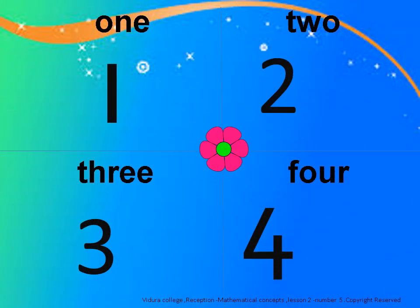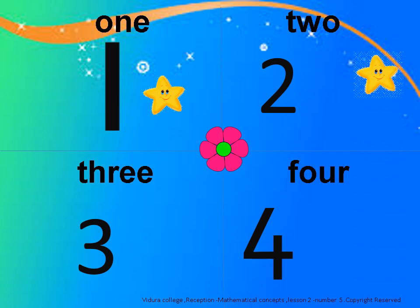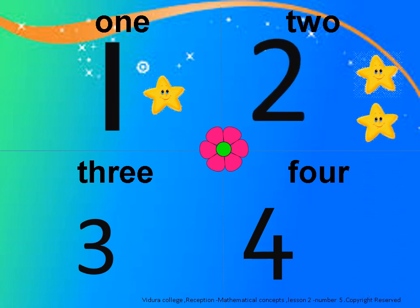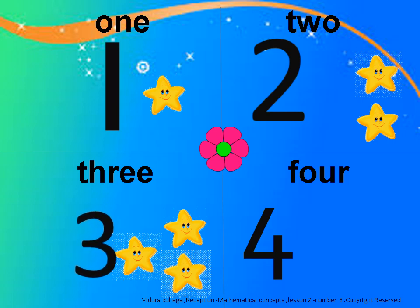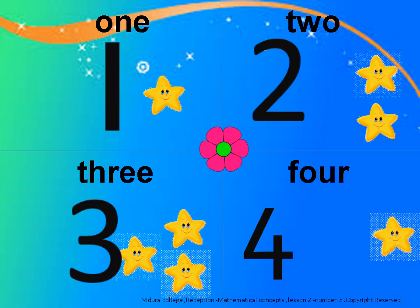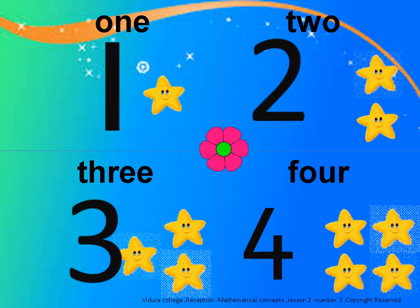Let's count stars. One, two, three — three stars. One, two, three, four — four stars.